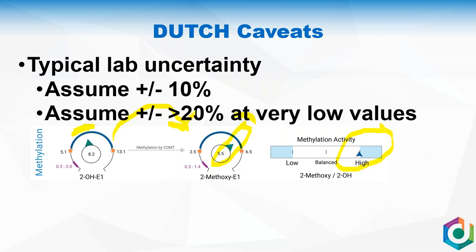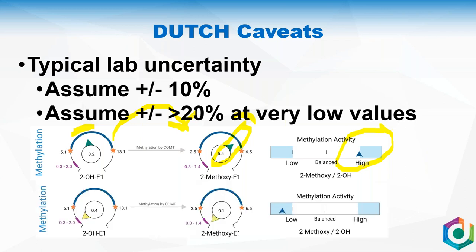At low concentrations, you'll want to expand your view. If 2-methoxy E1 is 0.1, that's really close to the detection limit of the assay — it could be 0.2. If 2-hydroxy E1 is 0.4, it could just as easily be 0.3. I know confidently that this patient has very low levels of these estrogen metabolites, but when I start evaluating a ratio — how well are you turning one metabolite into another — I want to relax my conclusion because there's more variability at very low concentrations.